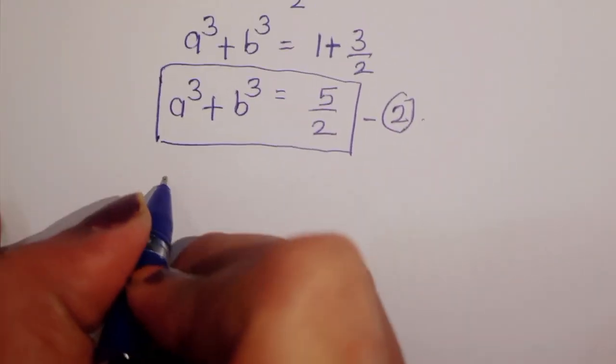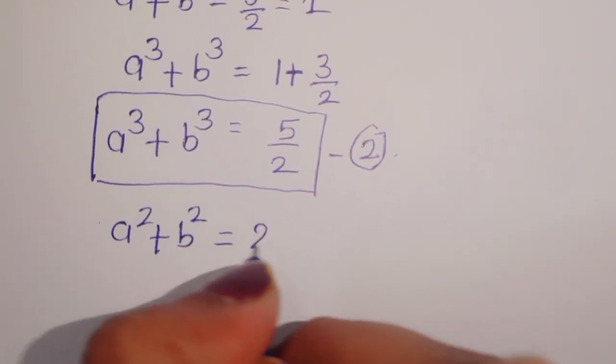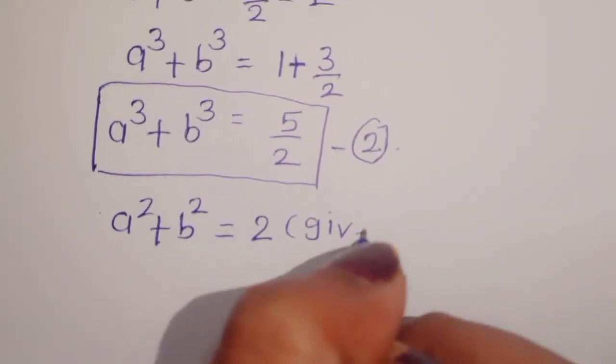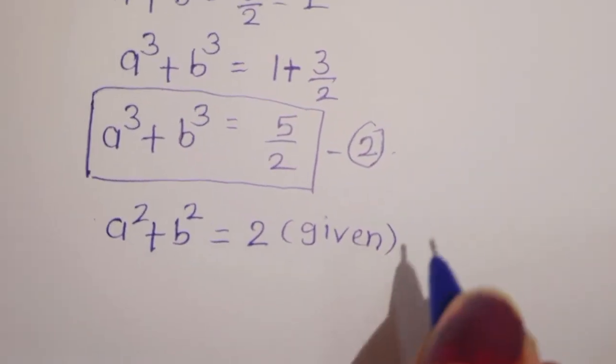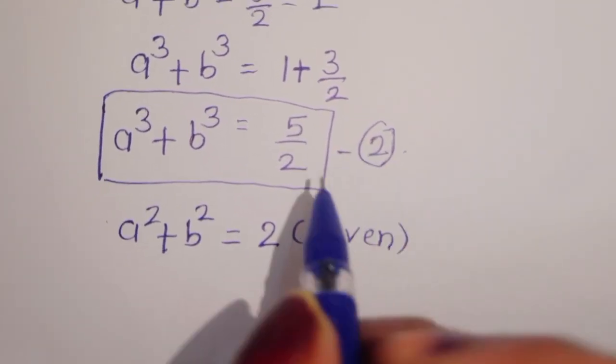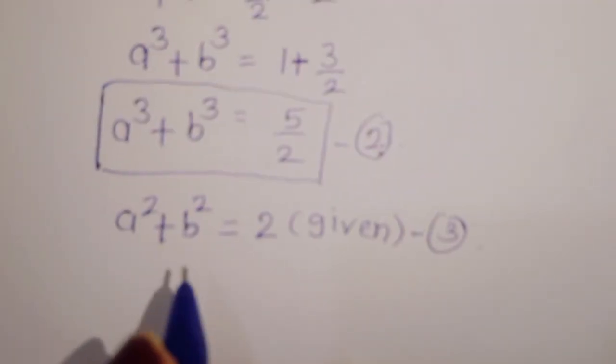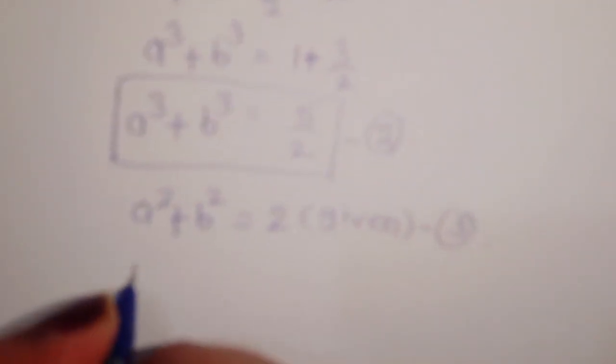Now a square plus b square is equal to 2, this is given — call this equation 3. Now we can multiply equation 2 and equation 3.